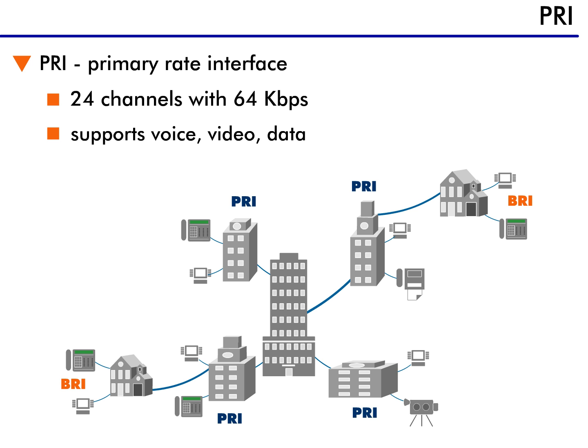Just as a BRI interface can combine two B-channels, the PRI can combine anywhere from 2 to 23 B-channels to create the bandwidth required.